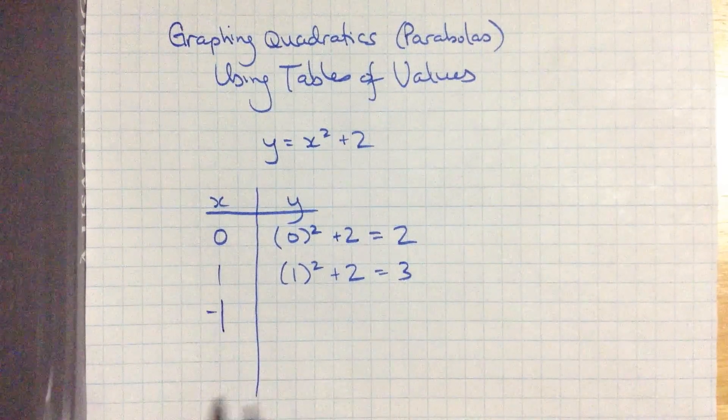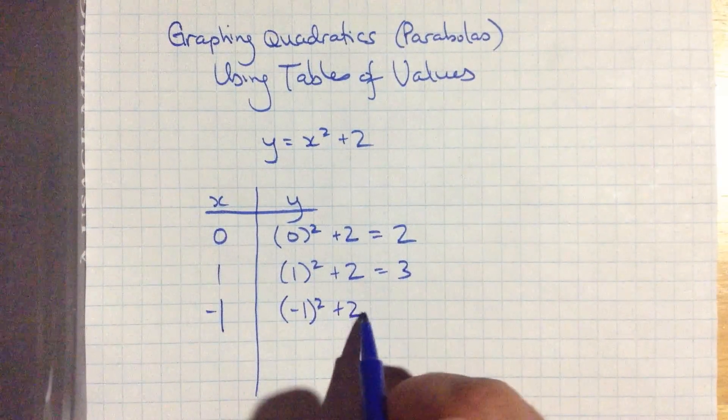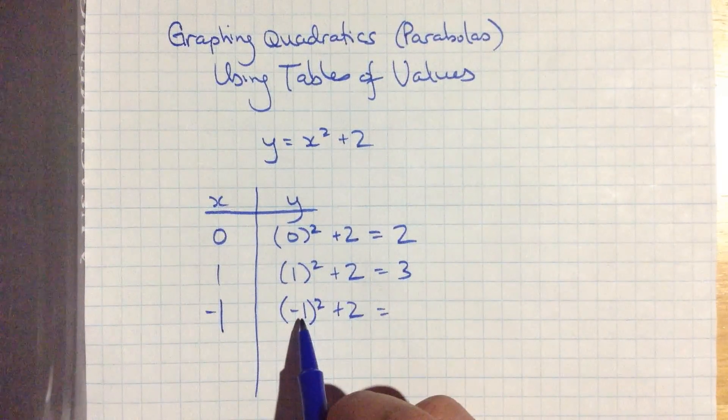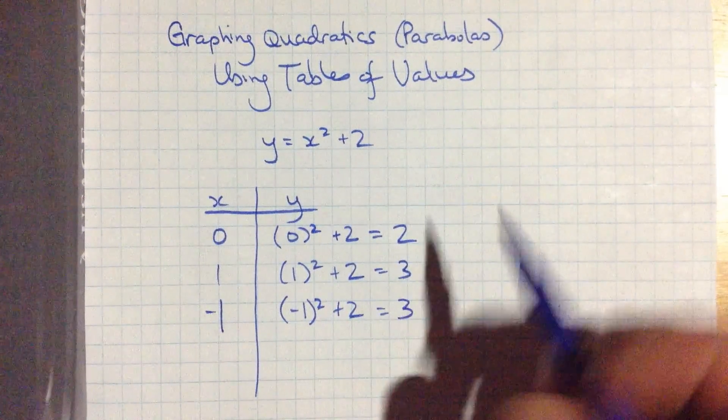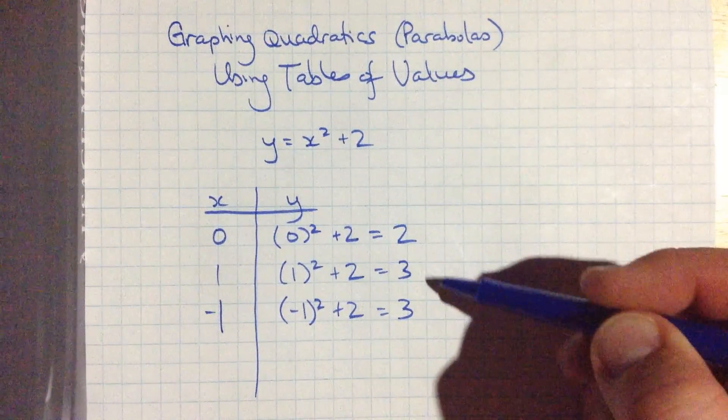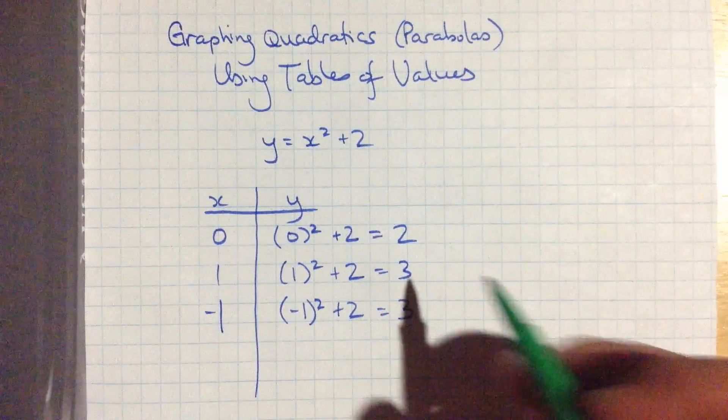Let's choose some negative values. Negative 1, if I choose negative 1 squared, plus 2. Negative 1 times negative 1 is positive 1. Positive 1 plus 2 is 3. And you can see I've got a repeated value here. When you see this in a quadratic, a value that shows up twice as a y value,